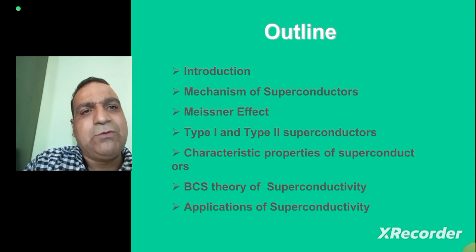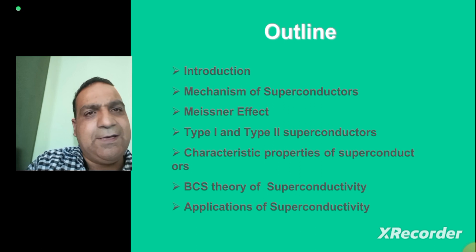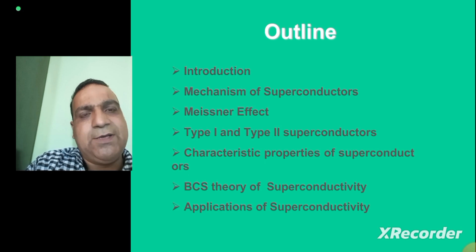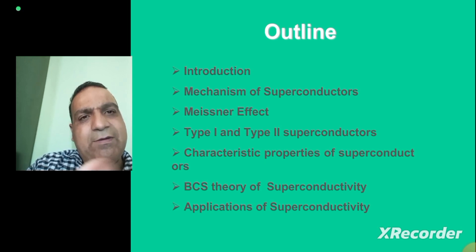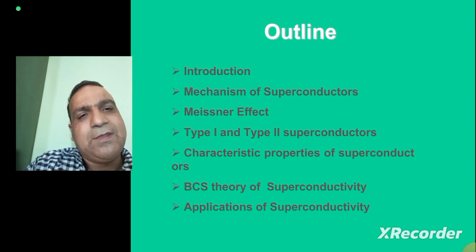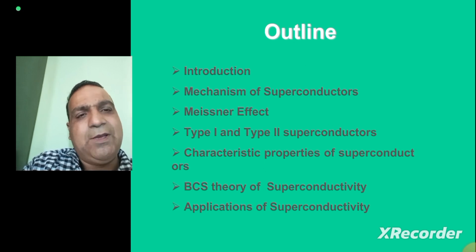To start with, this is the outline of my presentation. I will give you the introduction, talk about the mechanism of superconductivity, the Meissner effect — a very important effect that can explain some properties of superconductors — conventional superconductors, the types of superconductors: type 1 and type 2, some properties of superconductors, the basic BCS theory, and finally the applications of superconductivity.